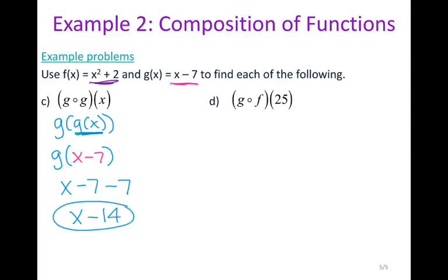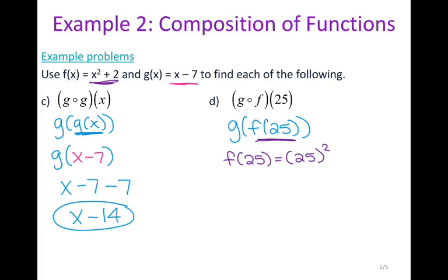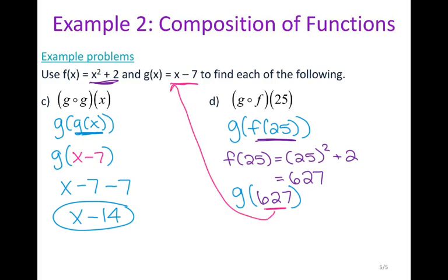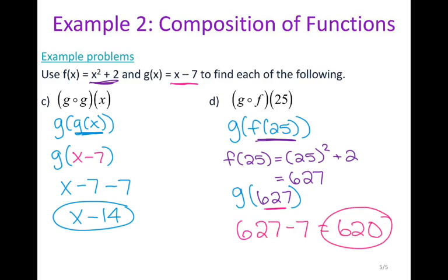The last thing is calculating composition numerically. For g of f of 25, first calculate f of 25: 25 squared plus 2 is 625 plus 2, which is 627. That result becomes the input into g, so g of 627 is 627 minus 7, which is 620. That concludes the video for section 1.8.